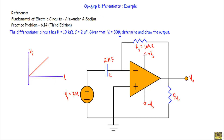In this video I will show you an example of an operational amplifier differentiator circuit. This is the reference for the circuit: Fundamentals of Electric Circuits by Alexander and Sadiku, Practice Problem 6.14, Third Edition — there is no solution given in the book. The differentiator circuit has R equal to 10 kilo-ohm and C equal to 2 micro-farad. The input voltage vi is equal to 30t, and we have to determine and draw the output voltage with respect to time.